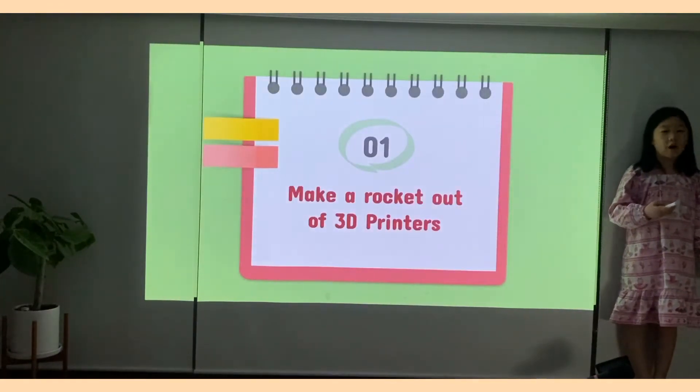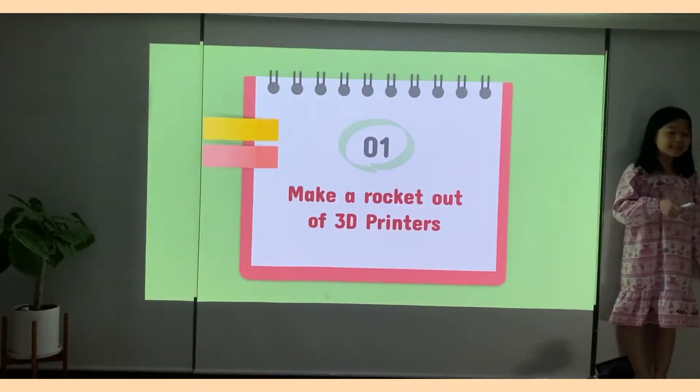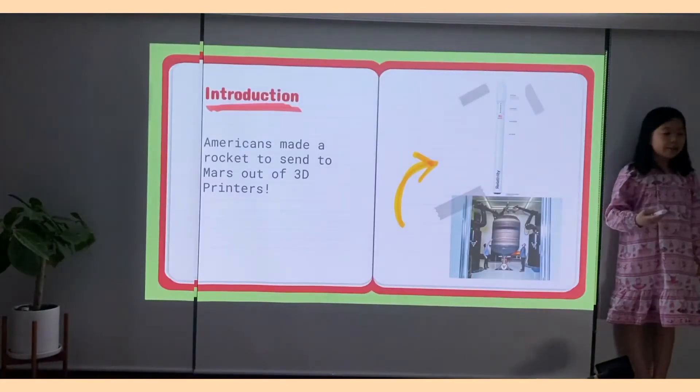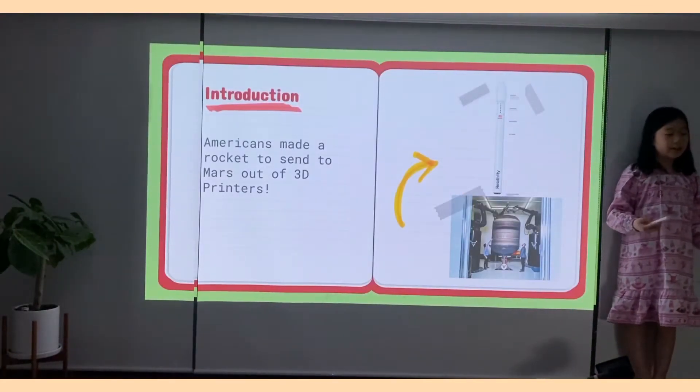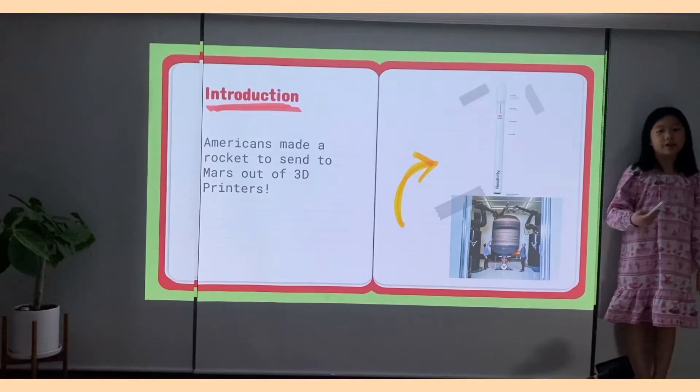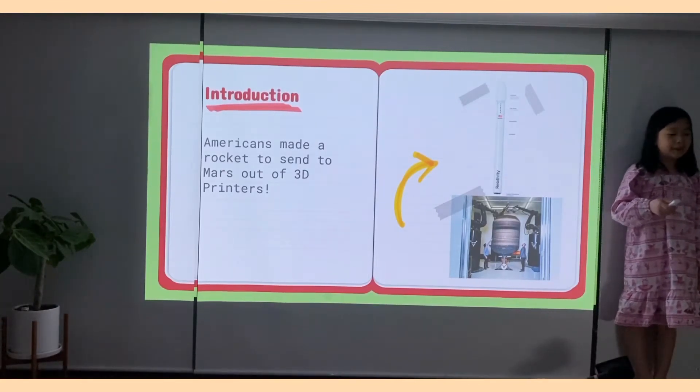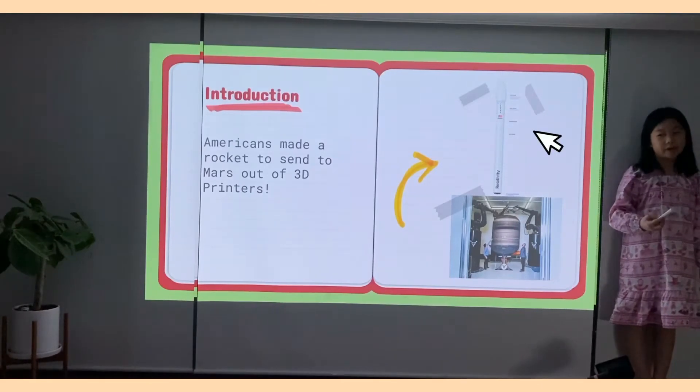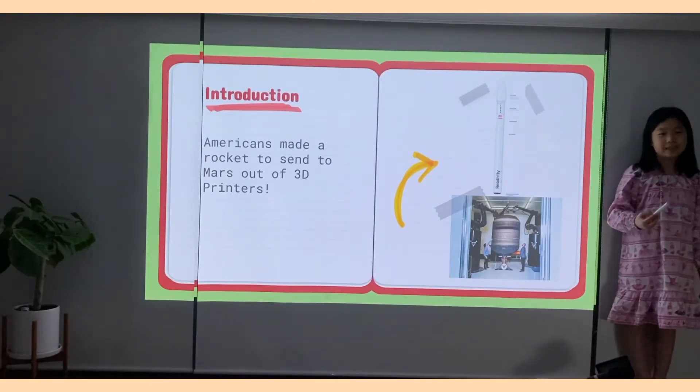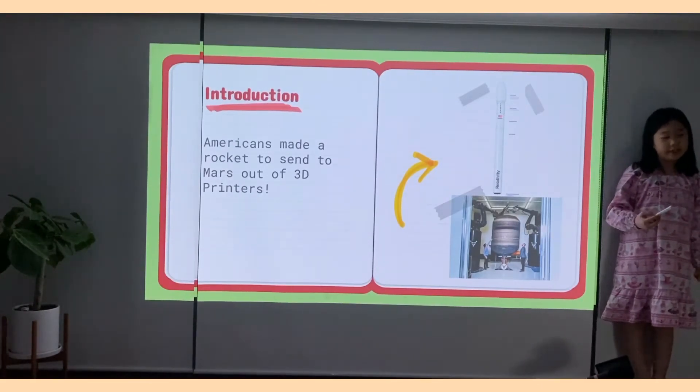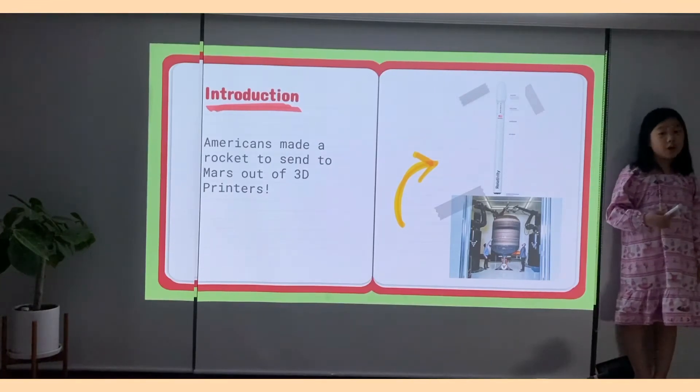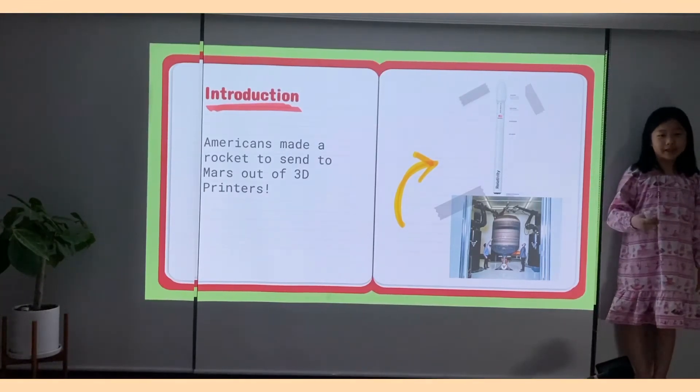First, make a rocket out of 3D printers. Americans actually made a rocket to send to Mars out of 3D printers. So here's the picture of the rocket that's made out of 3D printers and it's called relativity. And the picture below is the picture of people making this rocket.